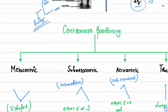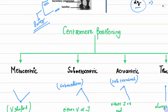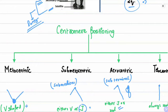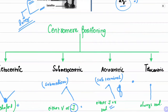On the basis of centromere position, chromosomes are divided into types. Metacentric: centromere lies at the center, forming a V-shape during anaphasic separation. Sub-metacentric: centromere is just away from the center, forming a V or J shape. Acrocentric: centromere near the terminal point, forming a J or rod shape. Telocentric: centromere exactly at the apical part, always forming a rod or I shape.